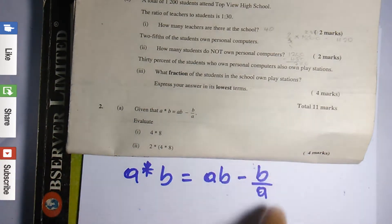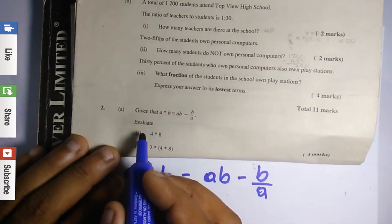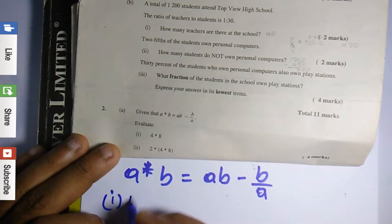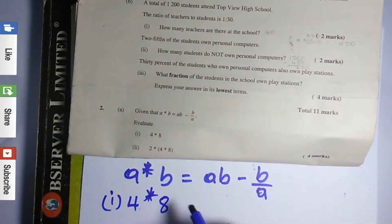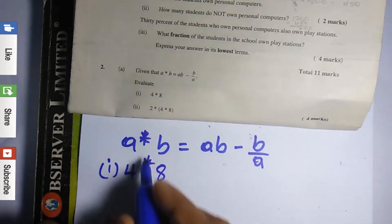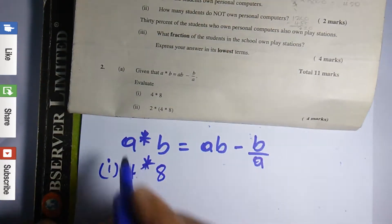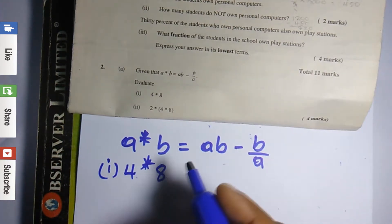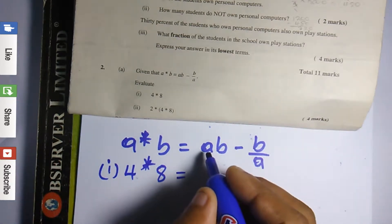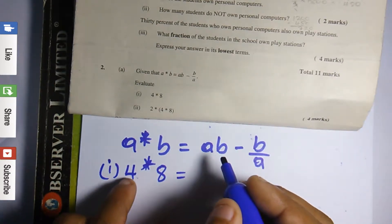For evaluate, they're supposed to evaluate 4 star 8. Now remember, we just match up the terms: a matches 4, b matches 8. So 4 star 8 is equal to - what did I do? They multiplied a times b. In this case we're going to multiply 4 times 8.